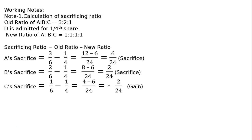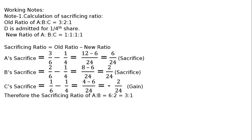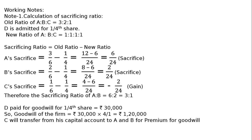Since C gains, C's capital account will be debited to A's capital and B's capital for goodwill. The gaining partner will have to pay for his share of gain. The sacrificing ratio of A to B equals 6 to 2, or 3 to 1. D paid for goodwill for one-fourth share is Rs. 30,000, so goodwill of the firm equals 30,000 multiplied by 4, that is Rs. 1,20,000. C will transfer 1,20,000 multiplied by gaining share 2/24, equal to Rs. 10,000.